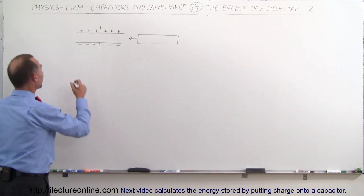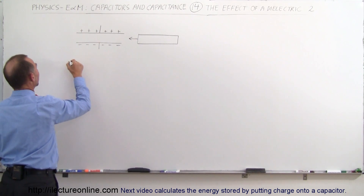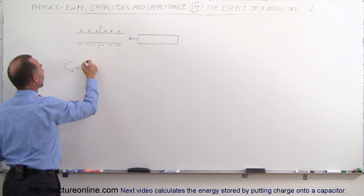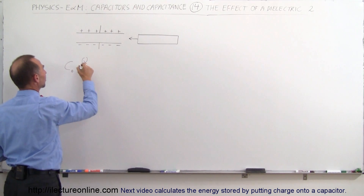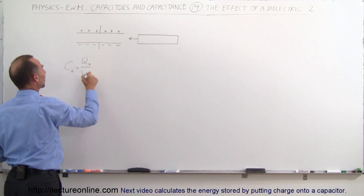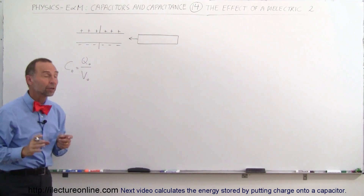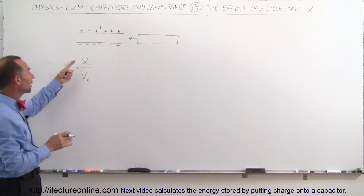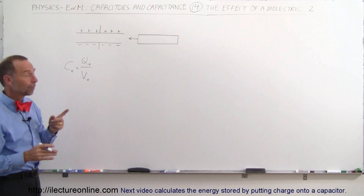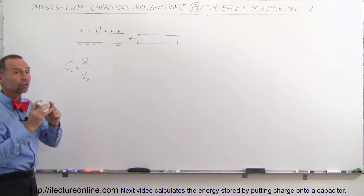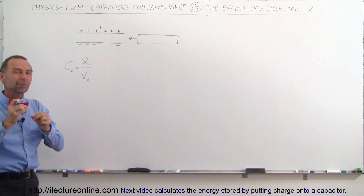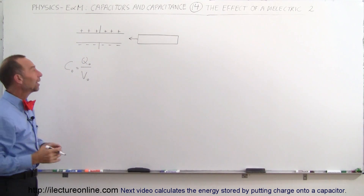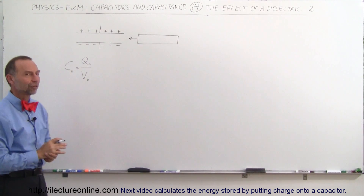Before we place the dielectric in there, the capacitance is going to be equal to the ratio of the charge placed on the capacitor divided by the potential difference. We'll use sub-zero notation everywhere: the initial capacitance C₀ equals the initial charge Q₀ divided by the initial potential difference V₀, before we remove the battery that provided the potential difference.